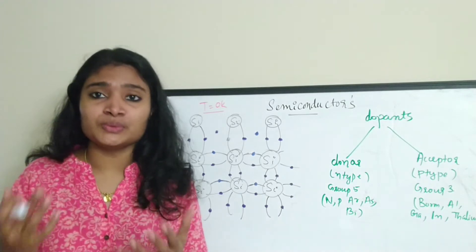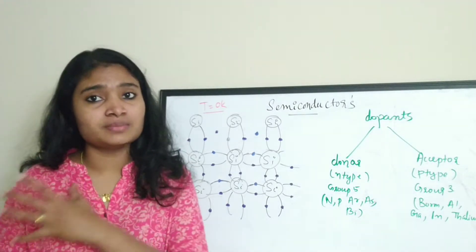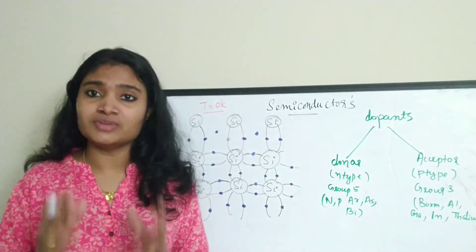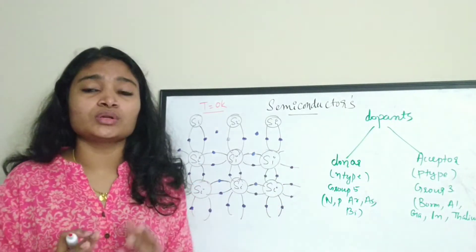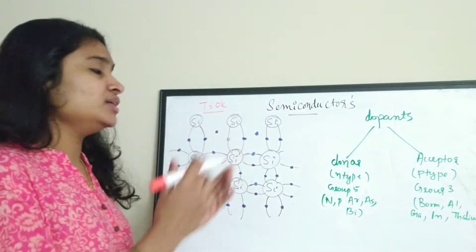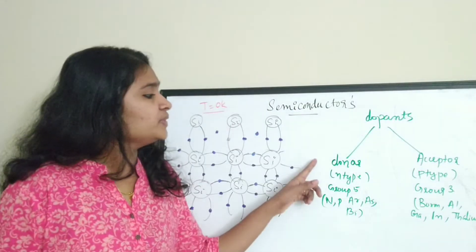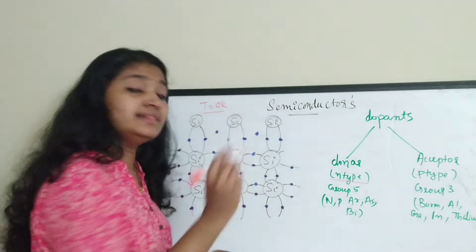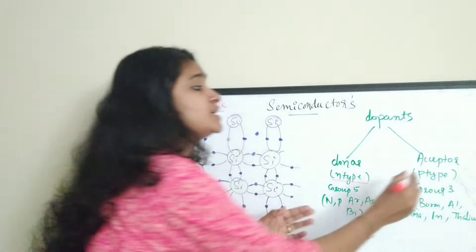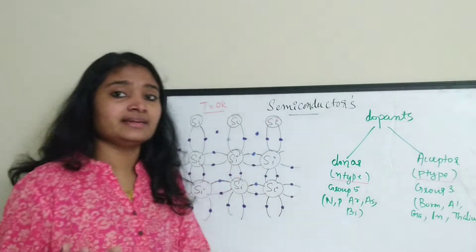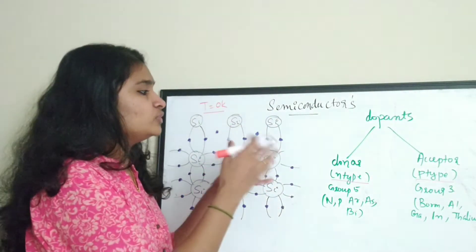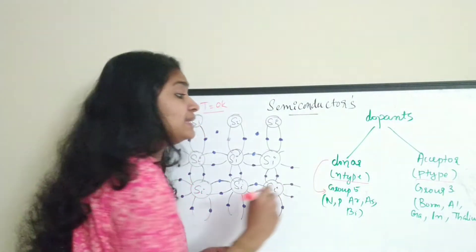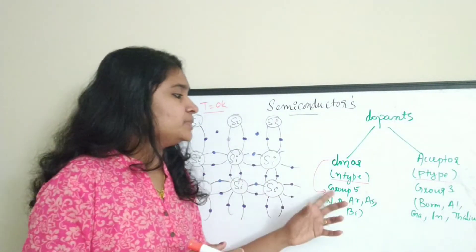Intrinsic semiconductor is the most pure form. If we add some impurities into that pure structure we get extrinsic semiconductors. The dopants or impurities are of two categories: donor impurities, which create N-type extrinsic semiconductors, and acceptor impurities, which create P-type semiconductors. Donor impurities are Group 5 elements in the periodic table.